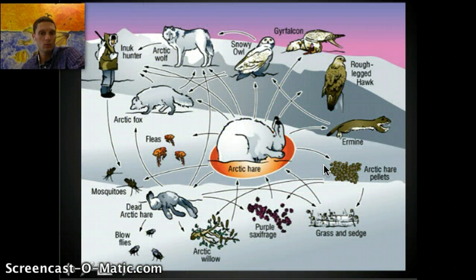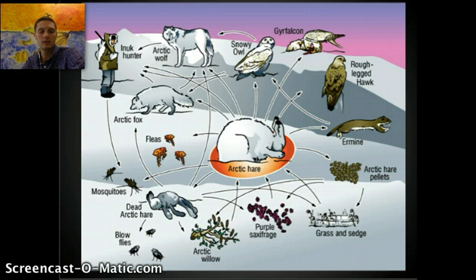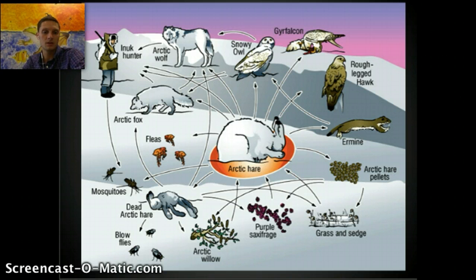One of the standards is to be able to deduce the trophic level of organisms in a food web. Pause the video and, by looking at these organisms and the flow of energy, see if you can figure out and write down the trophic levels for some of these. Start with a producer and go from there.